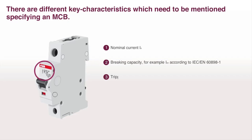Tripping characteristic: B, C, D, K, or Z. Frequency: AC or DC. Number of poles.